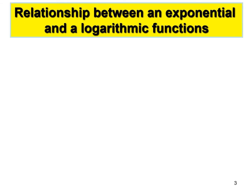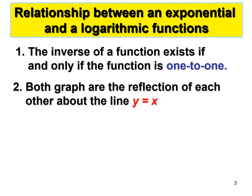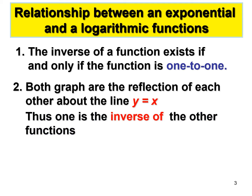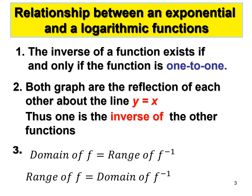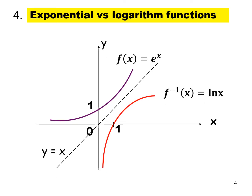The relationship between exponential and logarithmic functions: first, the inverse of a function exists if and only if the function is a one-to-one function. Second, both graphs — log and exponential — reflect on each other about the line y equals x, so one is the inverse of the other. Third, the domain of F equals the range of F inverse, and the range of F equals the domain of F inverse.